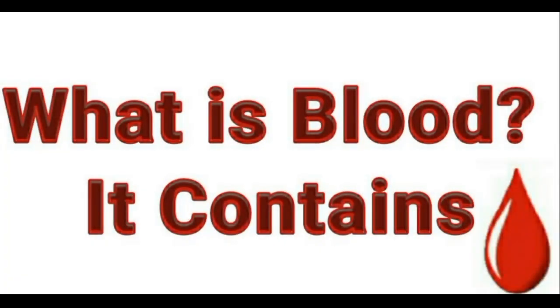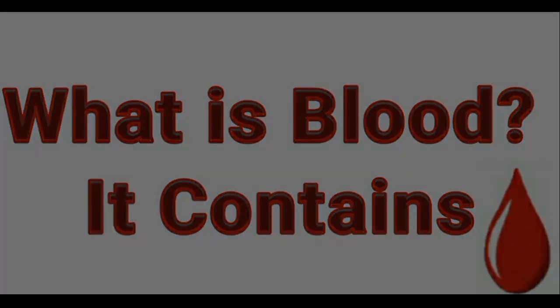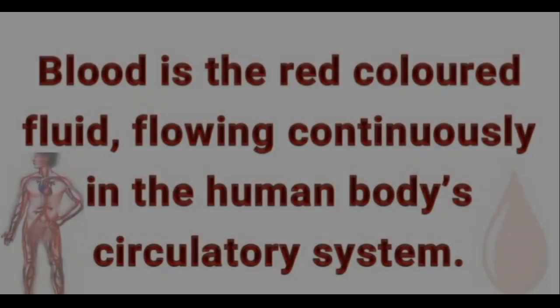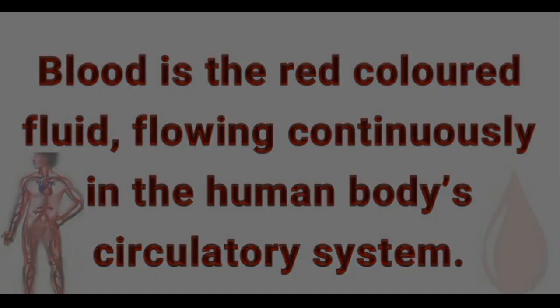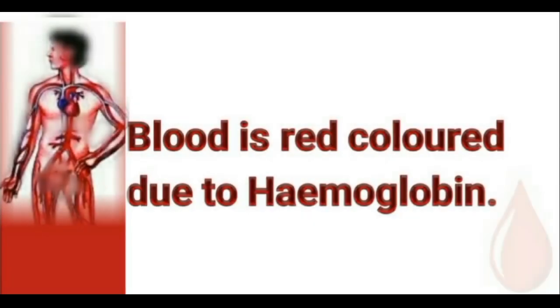What is blood? Blood is the red-colored fluid flowing continuously in the human body's circulatory system. Blood is red-colored due to hemoglobin.